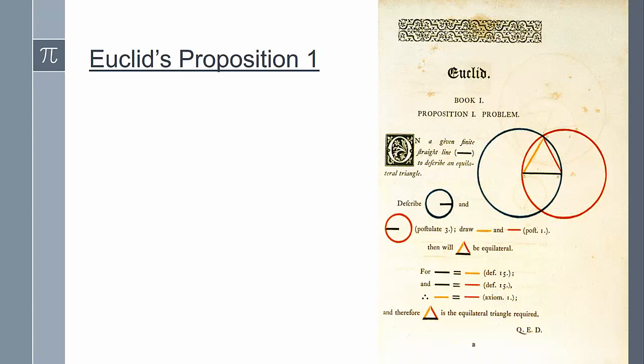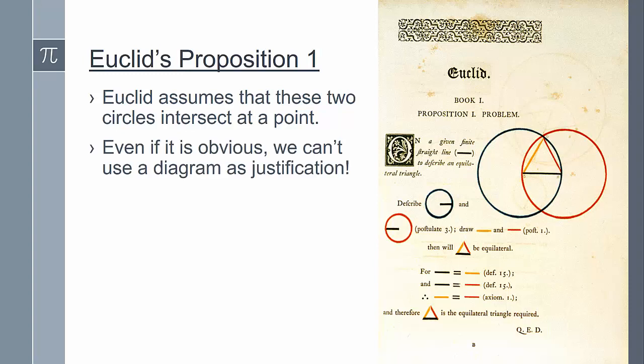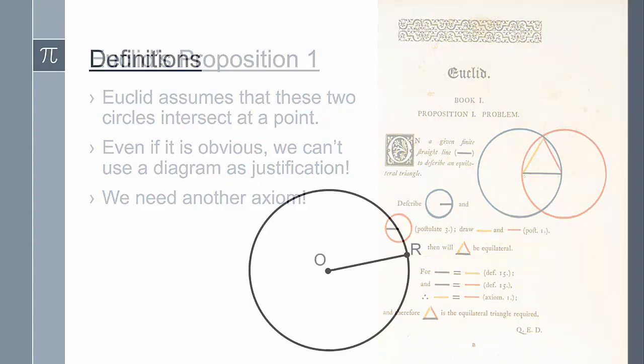But the problem is that Euclid assumes that when two circles intersect, they actually intersect at a point. Even though this might be clearly obvious when we draw two circles like this, that they're going to intersect in two points, we can't just use a diagram to justify something that seems obvious. So we actually need another axiom. Before we give another axiom, we're actually going to need the following definitions.